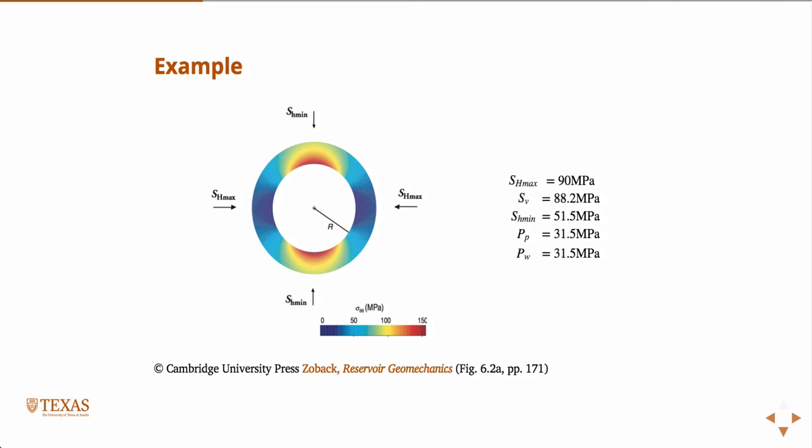This is the maximum hoop stress. In terms of your principal stresses, this is the maximum normal, maximum shear. Sigma_theta_theta would be there, and sigma_rr would be there, sigma_zz would be the intermediate.